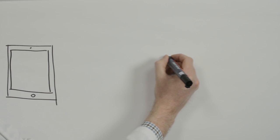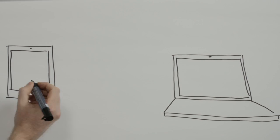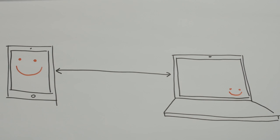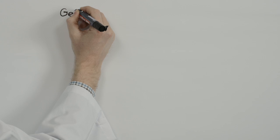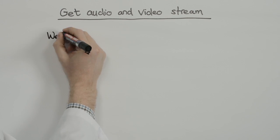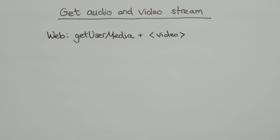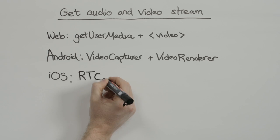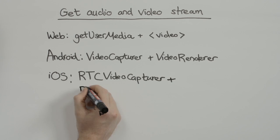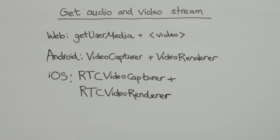Having built a signaling mechanism, the next step in your WebRTC app is to get video from the camera and audio from the microphone. On the web, we use the navigator.getUserMedia method to access streams from the camera and microphone. The equivalent on Android is VideoCapture to fetch audio and video streams, and VideoRenderer to display video. VideoCapture is a neat wrapper around the camera API, allowing WebRTC to create a media stream. On iOS, RTCVideoCapture and RTCVideoRenderer do the same job.